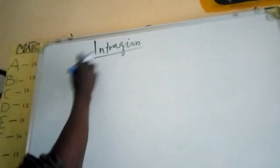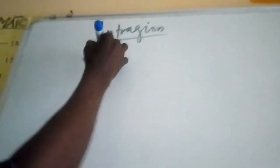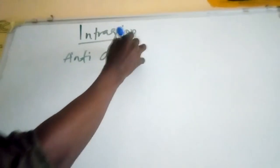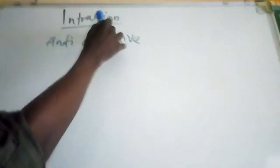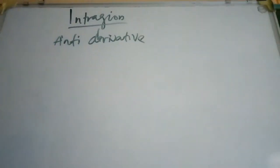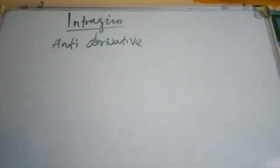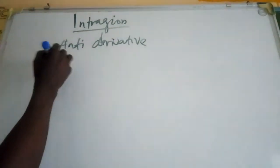This concept of integration — kamii da muka sani — integration is a reverse of differentiation. Kwa muna kine suna anti-derivative. Integration ana kine suna anti-derivative. Kamii da muka tina daga differentiation.